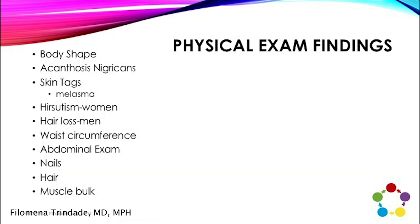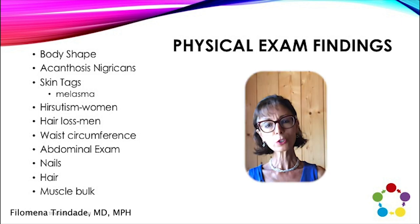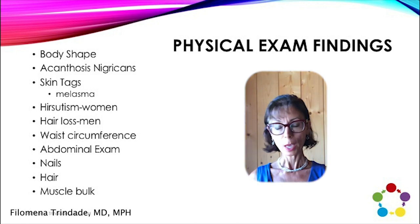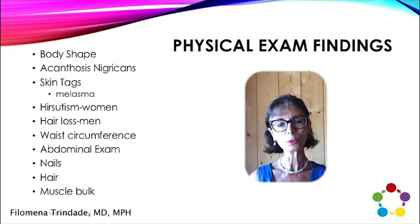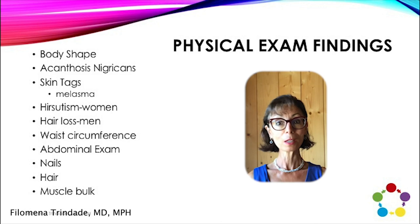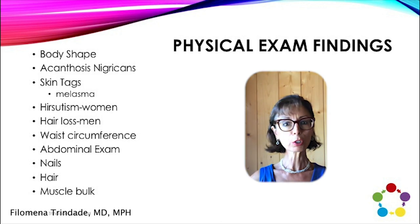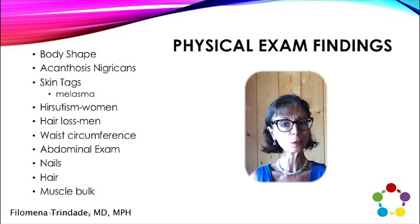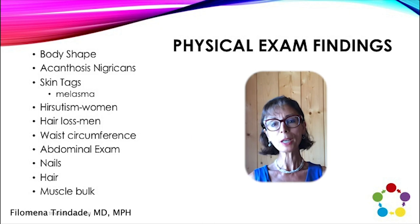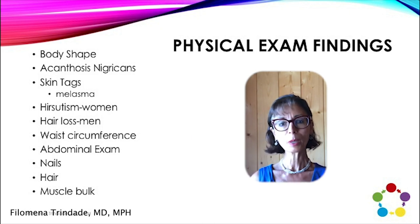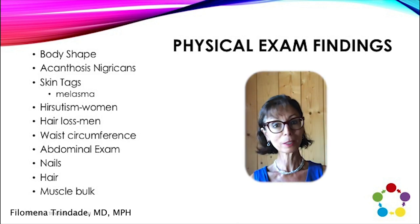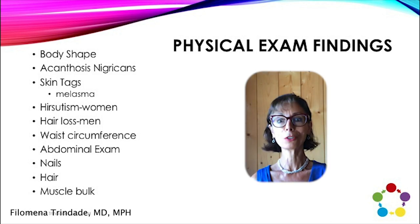Take all this information and do a thorough physical exam. Number one is just body shape itself — are they an apple or a gynoid if it's a woman, and for men, what is their structure like — do they have good muscle mass? Body shape is a little harder to assess in men. You can also see if there's a belly — in a woman that would be a sign of hypercortisolemia, and in men the same thing, but it can also be dietary indiscretion.